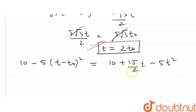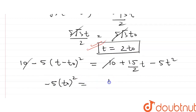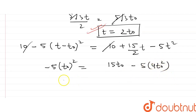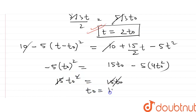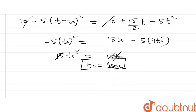Substituting t = 2·t0 into the y equation: −5·(2t0 − t0)² = (15/2)·t0, which gives −5·t0² on the left. Rearranging: 5·t0² + 15·t0² = 15·t0, so 20t0² − 5t0² = 15t0, giving 15t0² = 15t0. Therefore t0 = 1 second. This is the time interval between the two shots, which is the answer to part one.